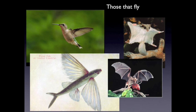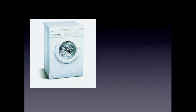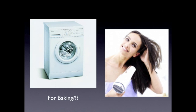Think of it in terms of your everyday world. Here's maybe your washing machine — are you going to bake a cake in that? It's not designed for it. It doesn't have the parts, it doesn't have the structure to perform that other activity. What about something like a hair dryer? Are you going to try to vacuum the rug with that? No — things are structured for certain activities.